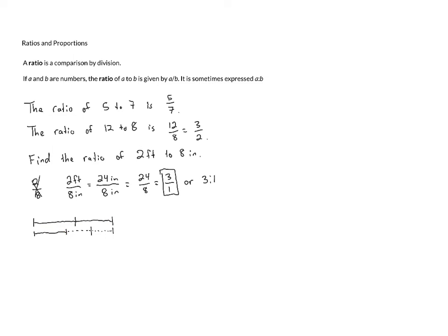I should have made this a little bit shorter. But basically, 2 feet is 3 times as long as 8 inches. The ratio of these quantities is 3 to 1, because 2 feet is 3 times as long as 8 inches.